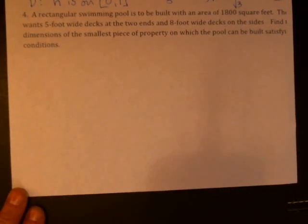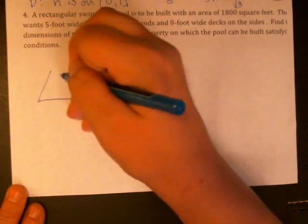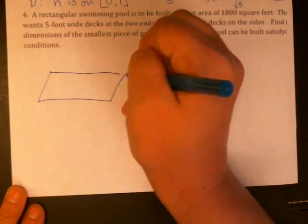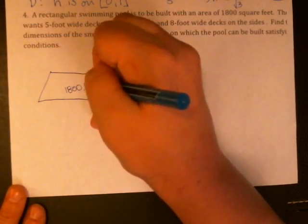Hi, y'all. Let's work through another applied optimization problem. In this one, we know that we're building a swimming pool. It's a rectangle and the surface area is 1,800 square feet.